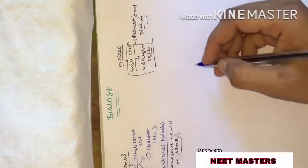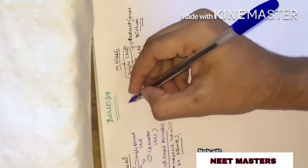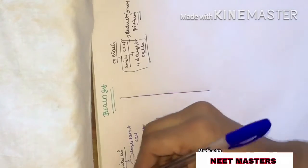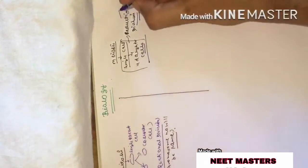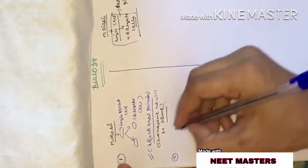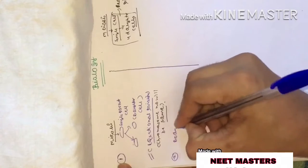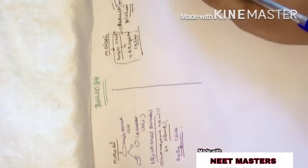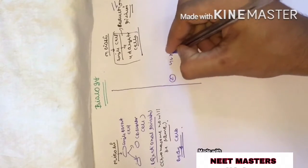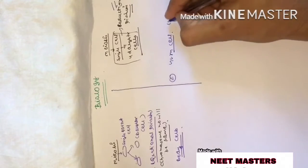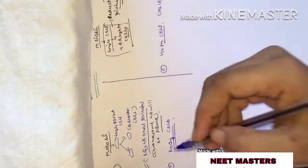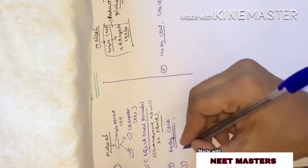Now let's define the differences between the two. First difference: mitosis is an equational division, while meiosis is a reduction division. Second difference: mitosis occurs in the body cells (somatic cells), while meiosis occurs in the sex cells (germ cells).